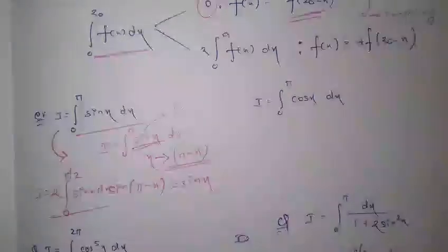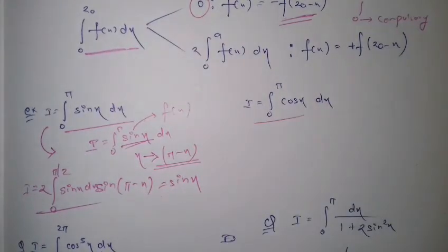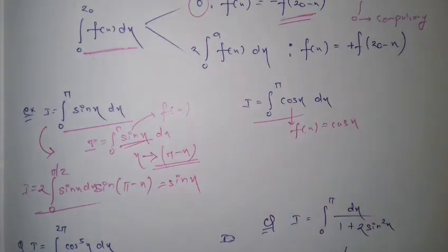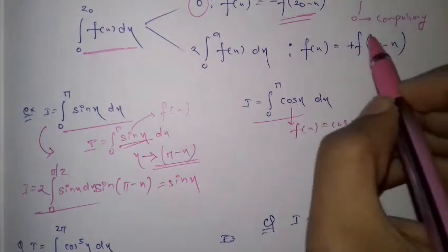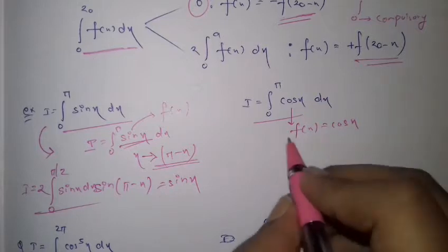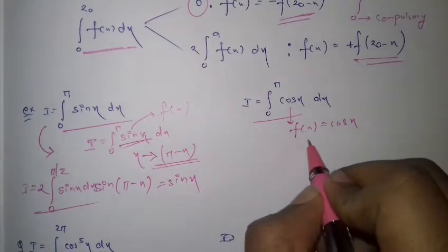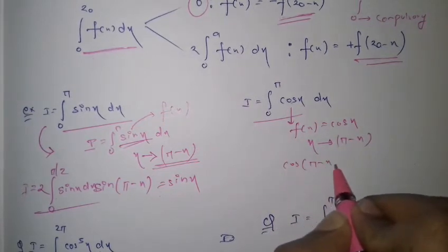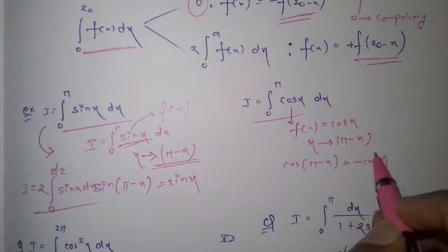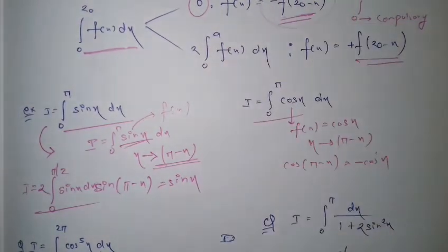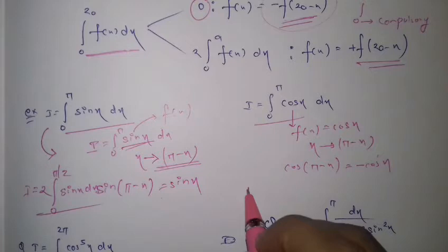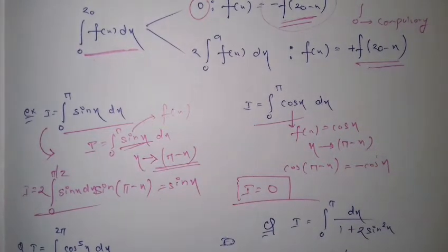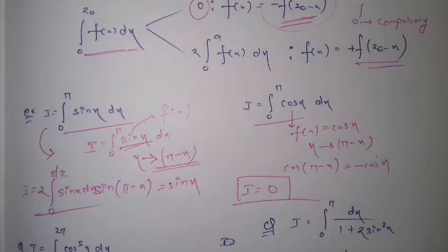Similarly, consider the function f(x) = cos x. When you substitute pi minus x, cos(pi - x) = -cos x, so a negative sign comes out. Therefore I = 0 directly. Let's solve some more problems to make this better understood.